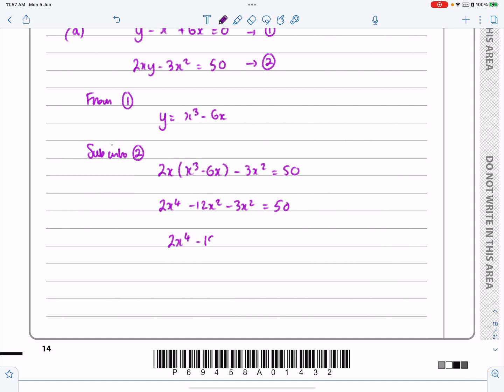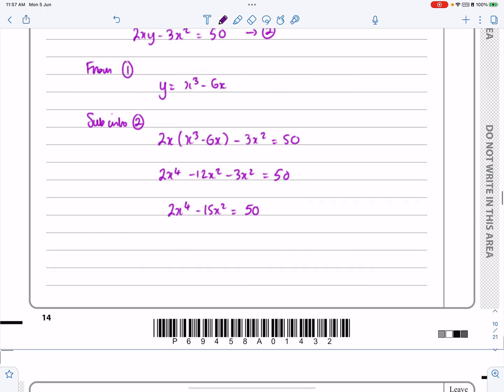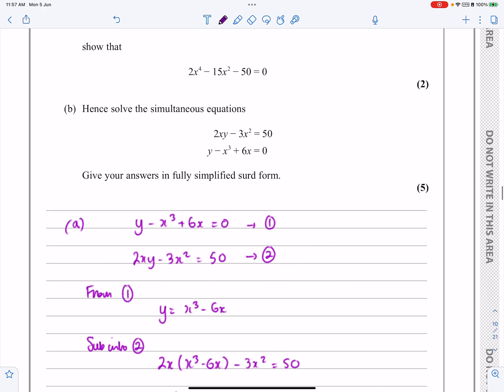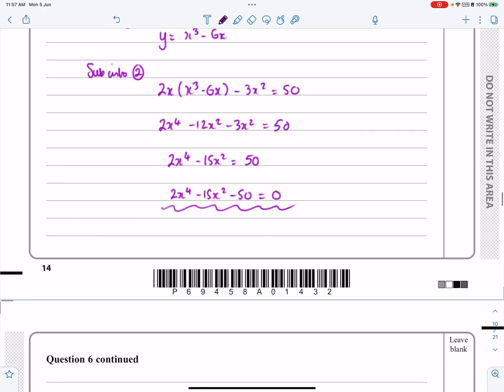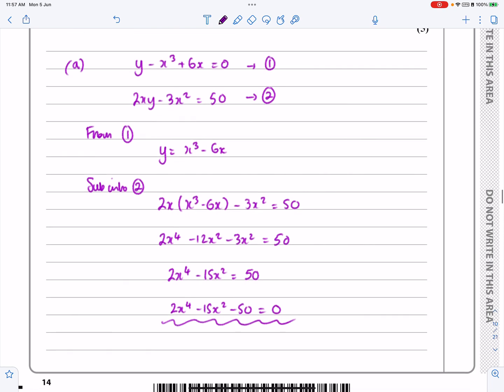Tidy that up, 2x to the 4 minus 15x squared is equal to 50. What are we trying to get? Yeah, perfect, and that comes to 2x to the 4 minus 15x squared minus 50 equals 0. Which is what we were trying to show in the first place. So yeah, relatively straightforward, that first part.